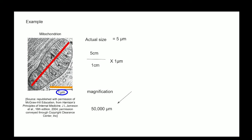So 5 centimeters is 50,000 micrometers as we multiply it by 10,000. We then divide this 50,000 micrometers by 5 micrometers, which is the actual size which we calculated above, and which gives a magnification of times 10.